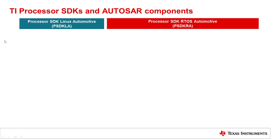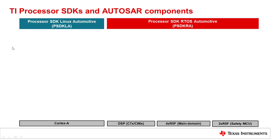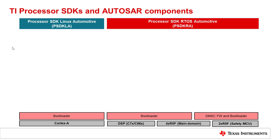Let us now take a closer look at the Linux and RTOS SDK software stack. Jacinto 7 SoC consists of multiple heterogeneous CPUs like ARM and DSP. Each CPU is targeted to perform specific optimized functions, and all CPUs collaborate together to realize the final end application. Linux SDK runs on ARM Cortex-A72 while RTOS SDK runs on other CPUs like the ARM Cortex-R5, C66 DSP, and C7x DSP.